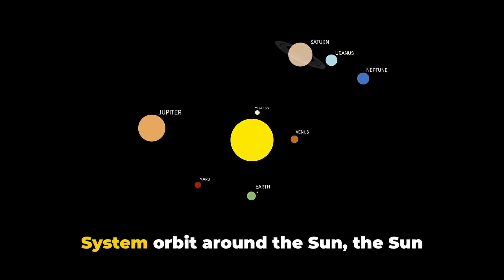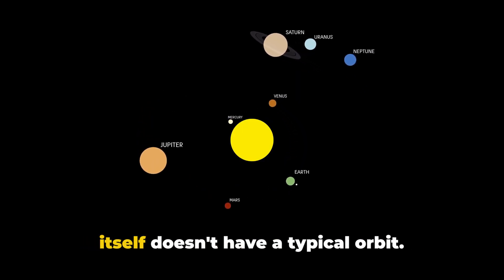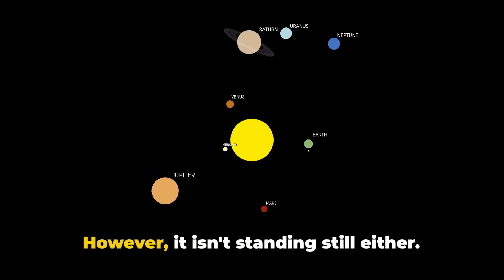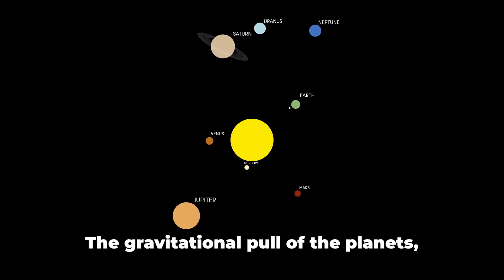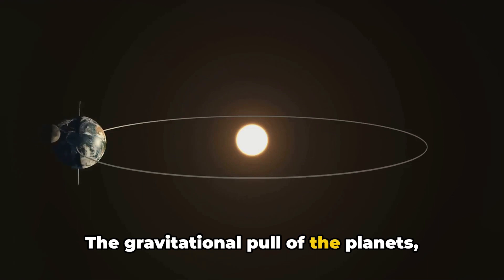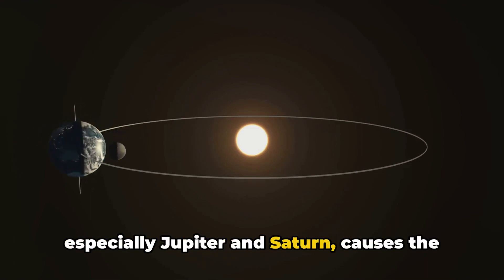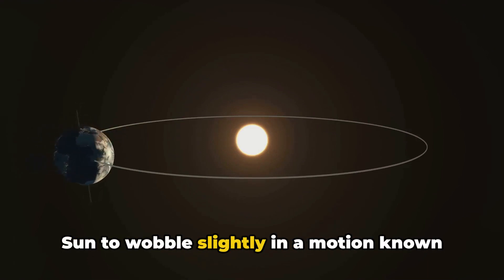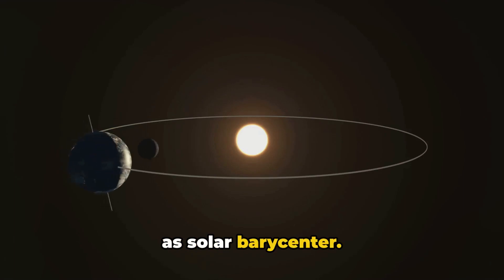Now, while the planets in our solar system orbit around the sun, the sun itself doesn't have a typical orbit. However, it isn't standing still either. The gravitational pull of the planets, especially Jupiter and Saturn, causes the sun to wobble slightly in a motion known as solar barycenter.